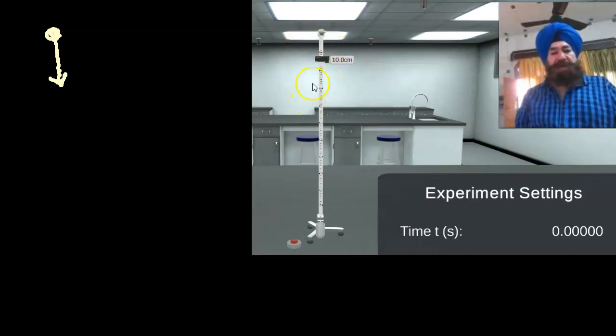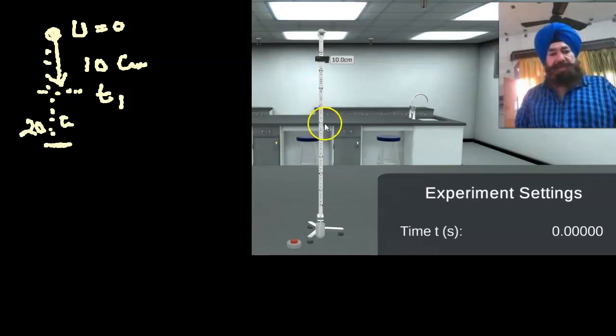When it falls freely with initial velocity equal to zero, I'll find the time when it moves a distance of 10 centimeters, then 20 centimeters, then 30 centimeters from here to here. You call it T1, T2, T3, and so on.